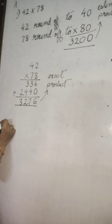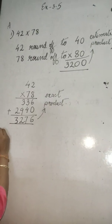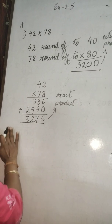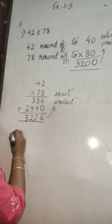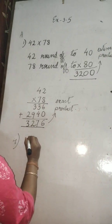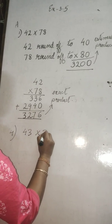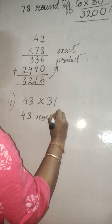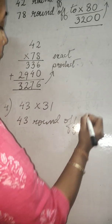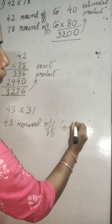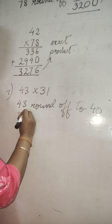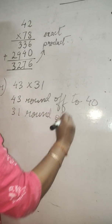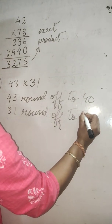Another example: 43 into 31. 43 round off to 40. 31 round off to 30.